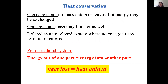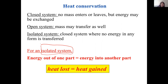Heat is a conserved quantity. Since heat is energy and energy is conserved, heat must also be conserved. For conservation of heat, we use an isolated system — a closed system with no energy going in or out. In an isolated system, heat lost equals heat gained. That is the principle of heat conservation.